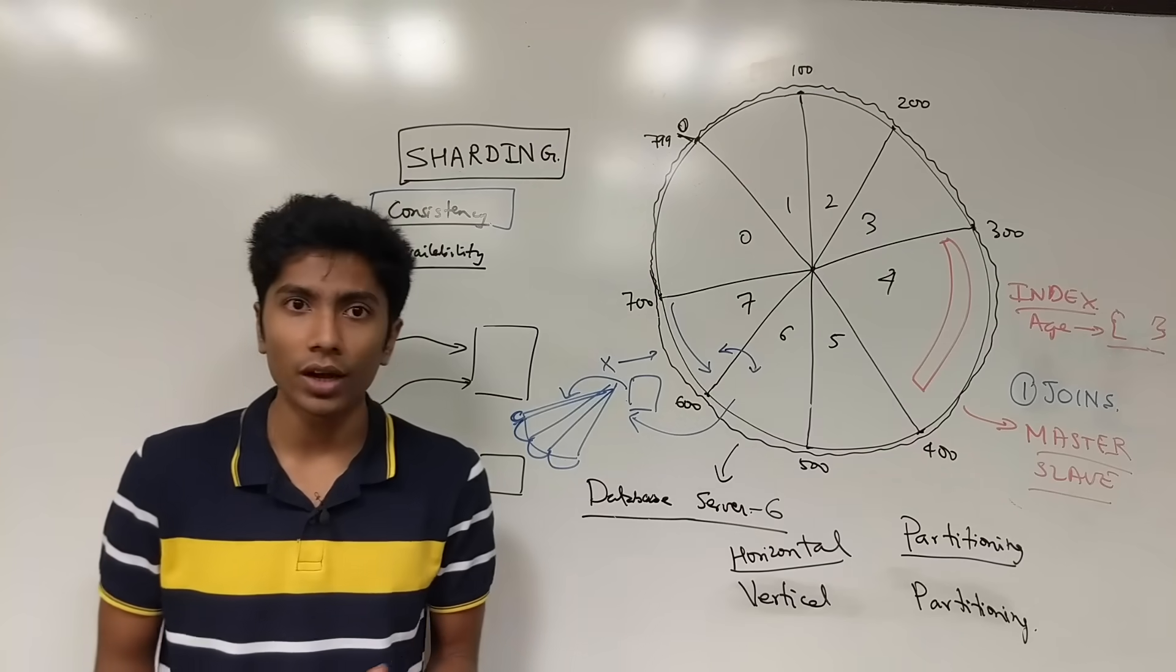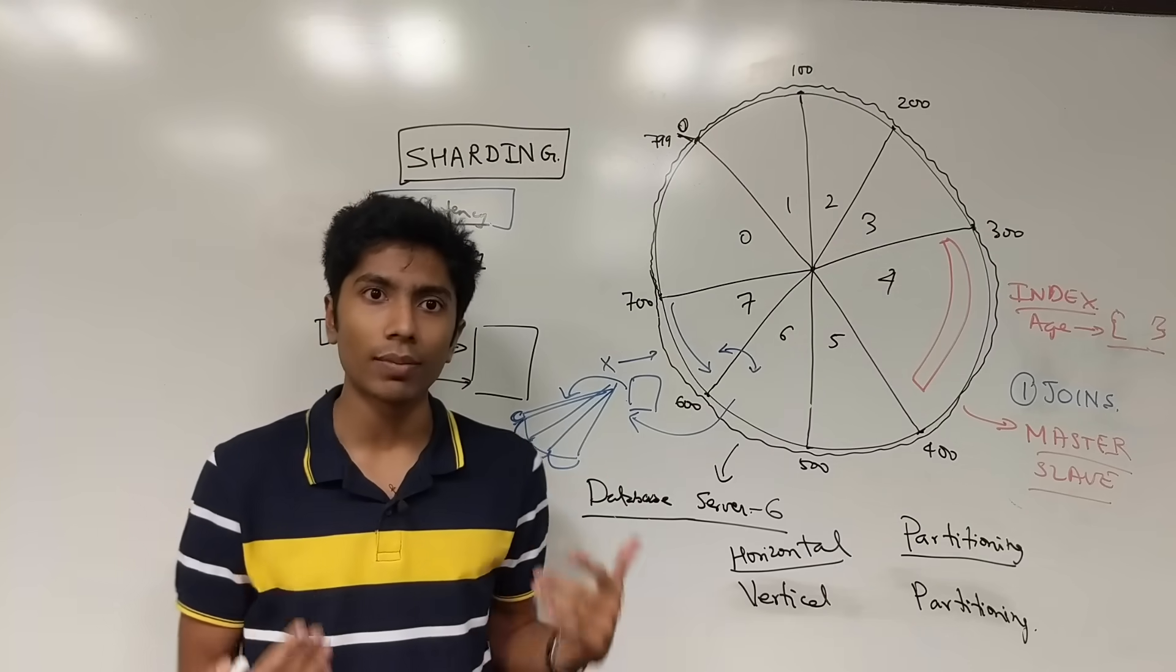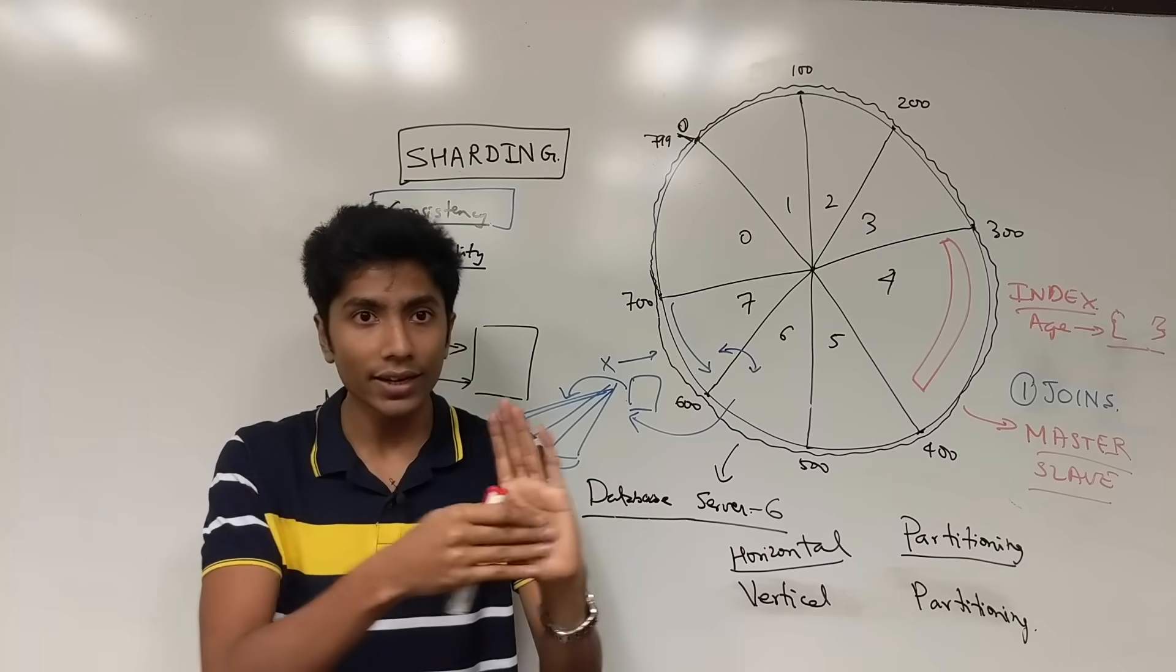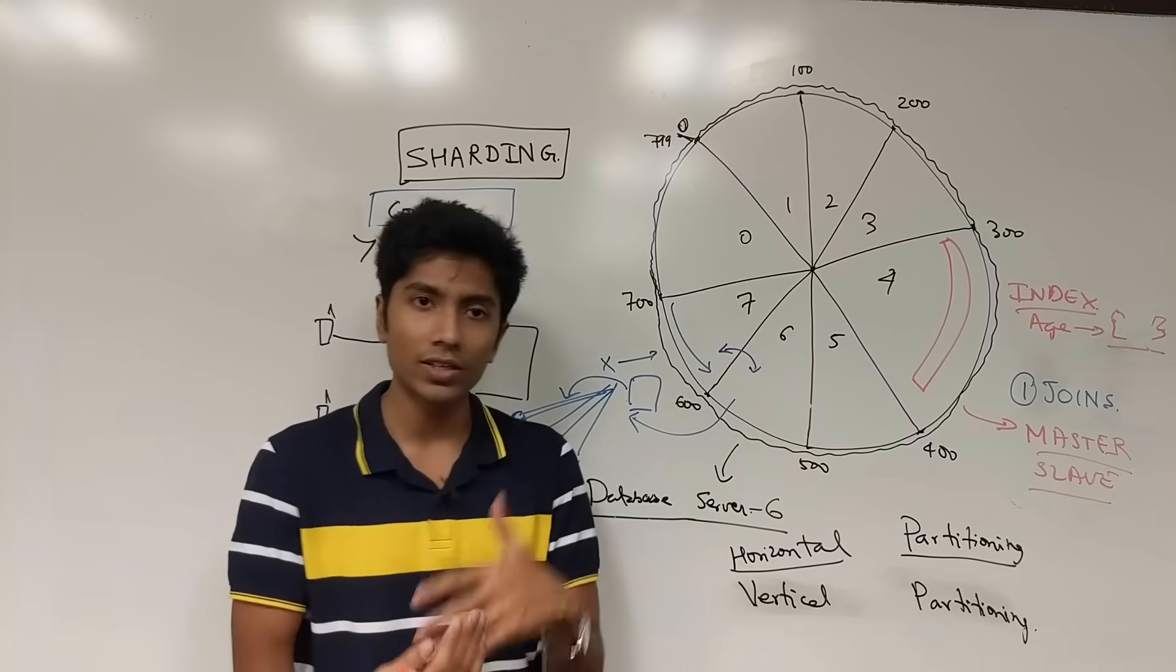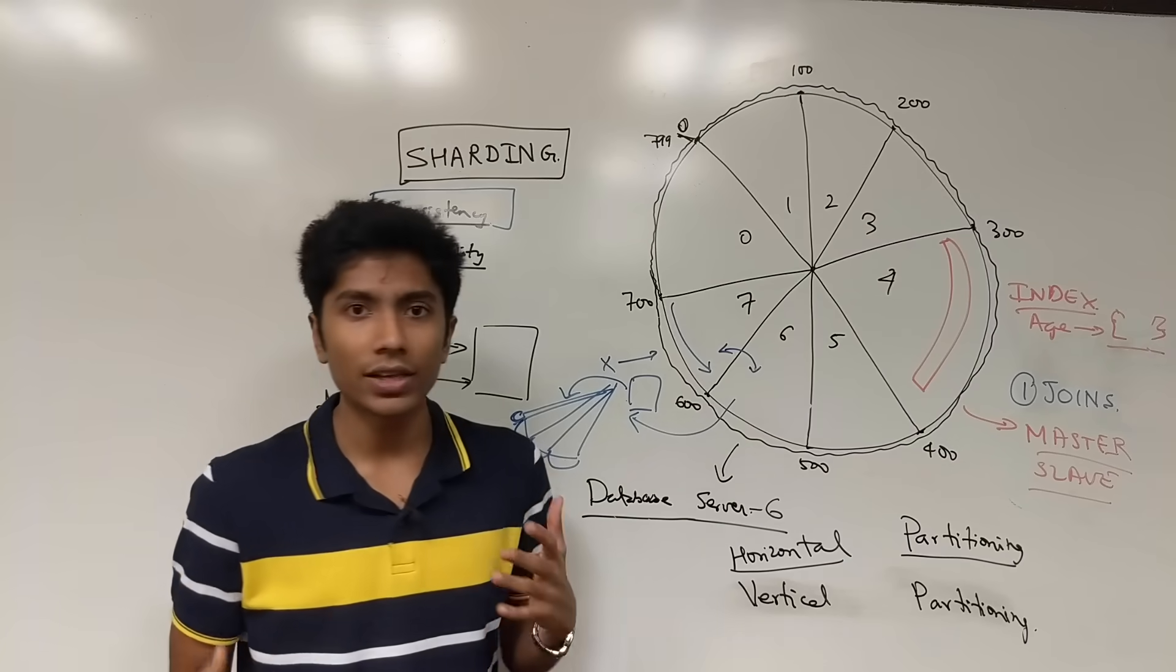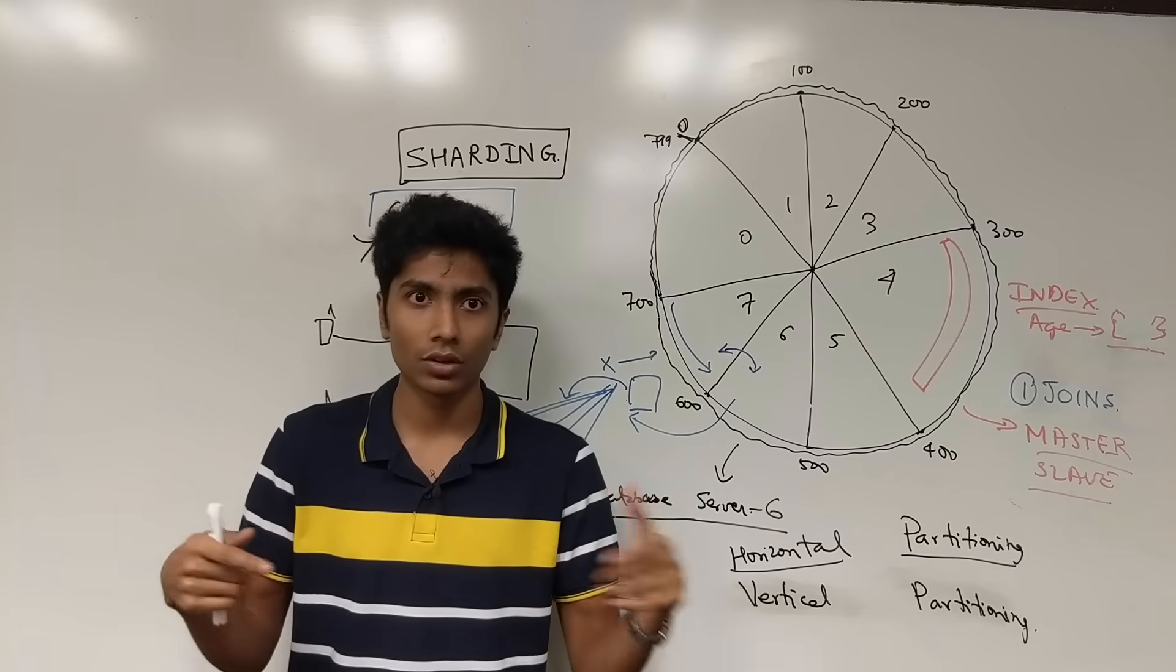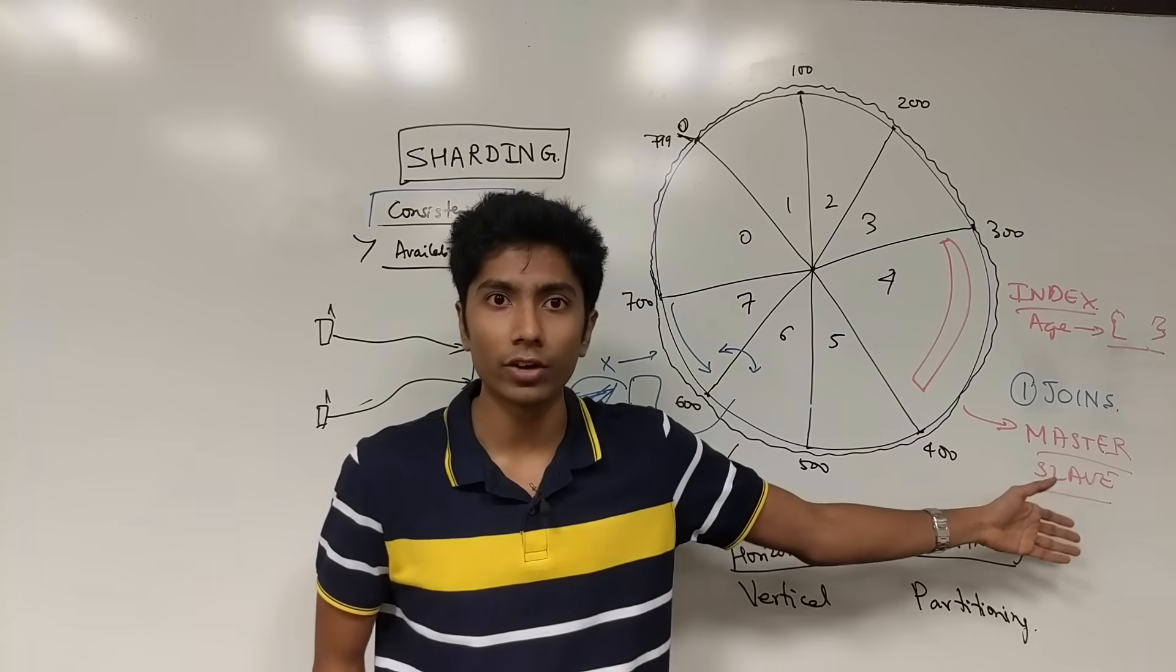The master-slave architecture is a very common architecture. What happens in this is that you have multiple slaves which are copying the master. Whenever there's a write request, it's always on the master. The master is the most updated copy. While the slaves continuously poll the master and read from it. What then happens is if there's a read request, it can be distributed across the slaves. While if there's a write request, it always goes to the master. In case the master fails, the slaves choose one master amongst themselves. And so there's good single point of failure tolerance over here.